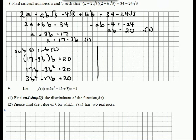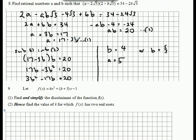Substituting equation 1 into equation 2, ab equals 20 gets rewritten. Expanding the brackets gives a quadratic equation. We can use the calculator to solve for b, giving 2 solutions. Then we have 2 solutions for a. If b equals 4, we've got 4 times 3 equals 12, so 17 take 12 is 5. If b is 5 thirds, the 3 cancels out, we've got 17 take 5, which is 12.